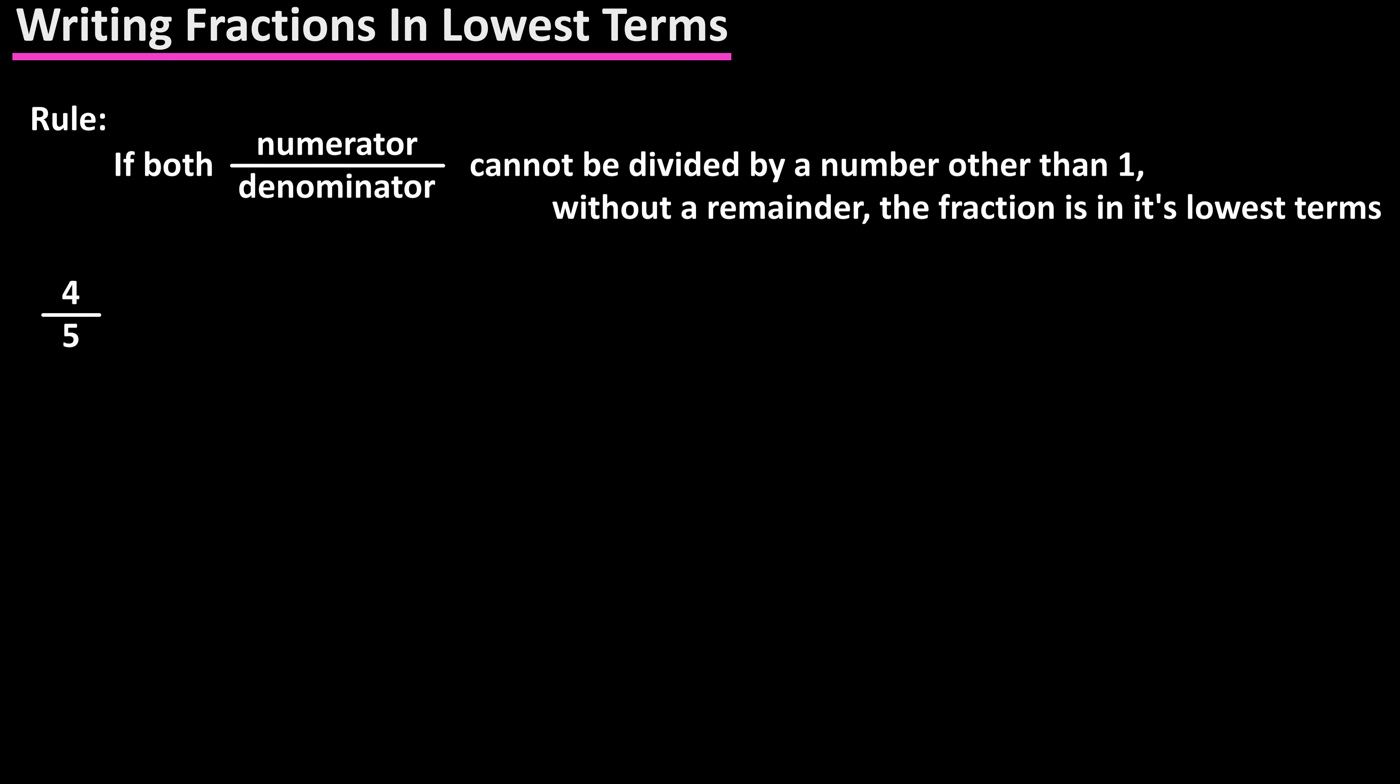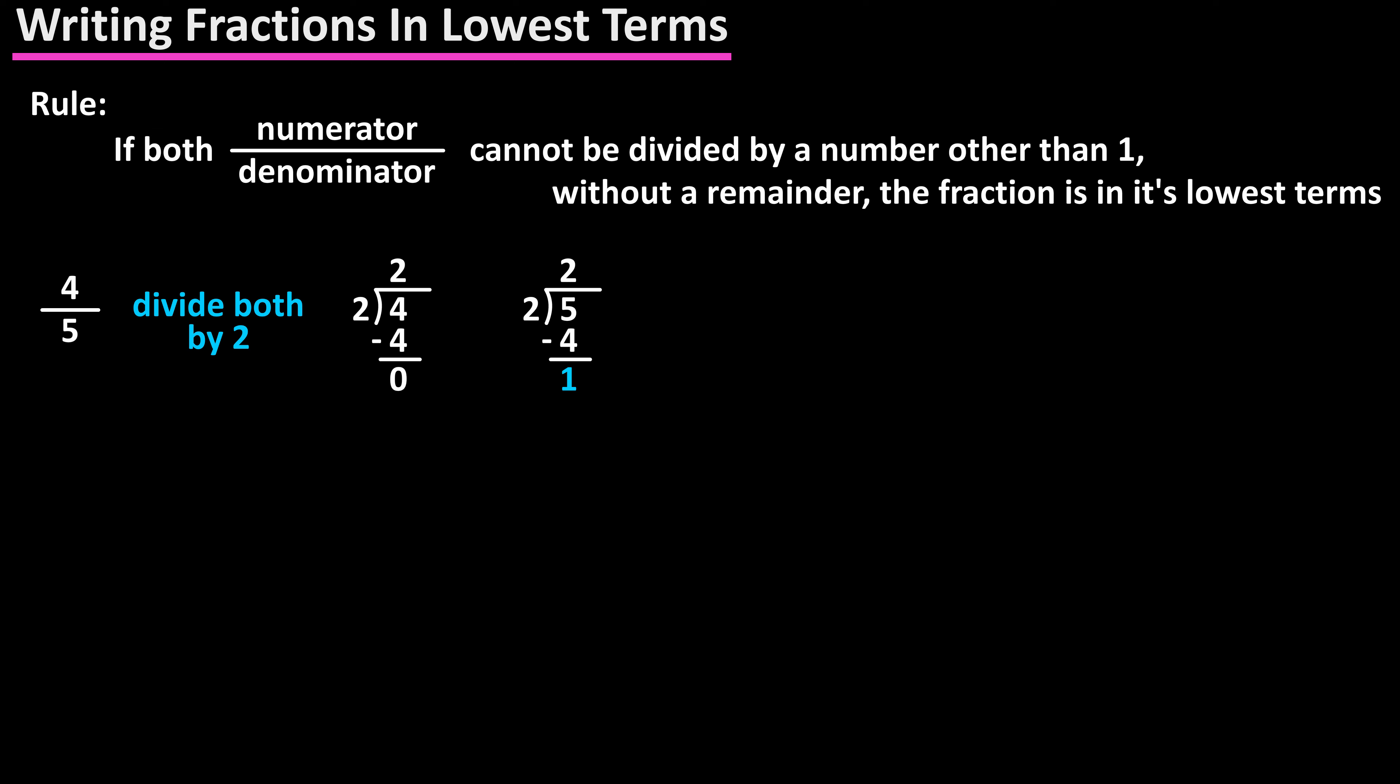For instance, 4 over 5: if we divide both by 2, 5 divided by 2 has a remainder. If we divide both by 3, both 4 and 5 have a remainder. And if we divide both by 4, again 5 divided by 4 has a remainder. So this fraction is in its lowest terms. There is no greatest common factor other than one.